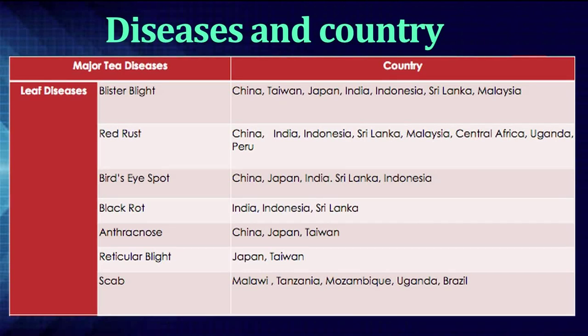Now, let's have a look at some major tea diseases and their occurring countries. The first are the leaf diseases. The most important leaf disease is blister blight, occurring in countries like China, Taiwan, Japan, India, Indonesia, Sri Lanka, and Malaysia. Then, red rust — seen in China, India, Indonesia, Sri Lanka, Malaysia, Central Africa, Uganda and Peru. Then, bird's eye spot, which occurs in countries like China, Japan, India, Sri Lanka, and Indonesia.